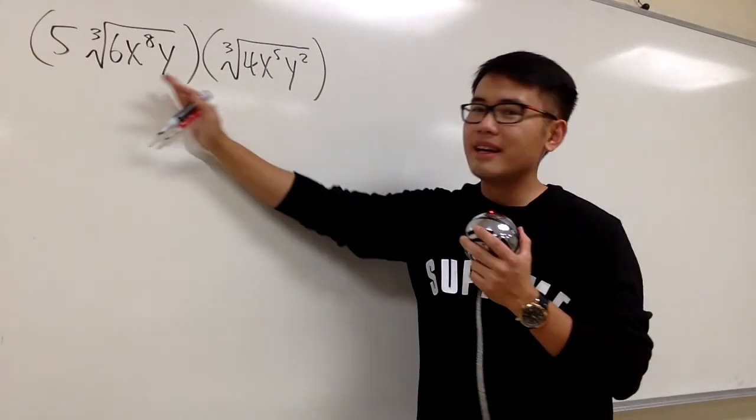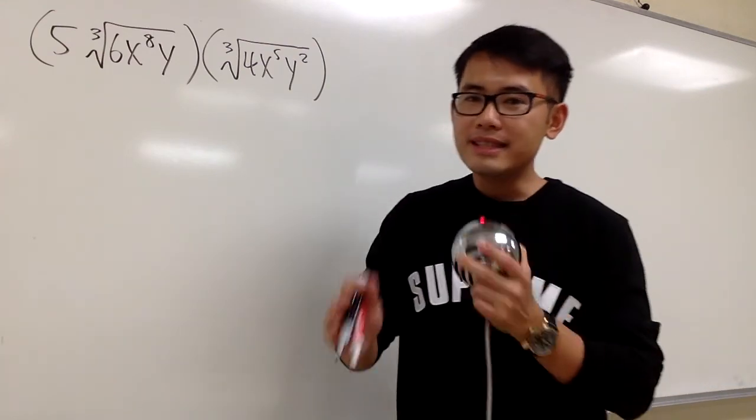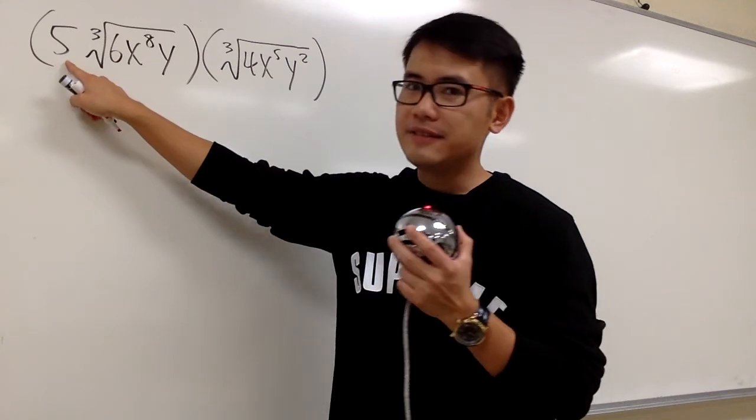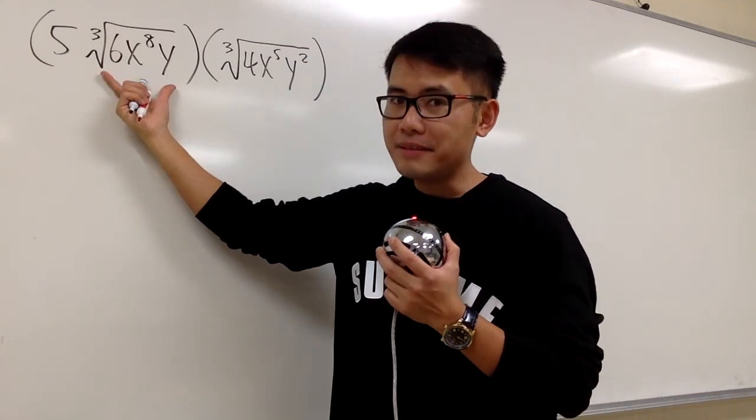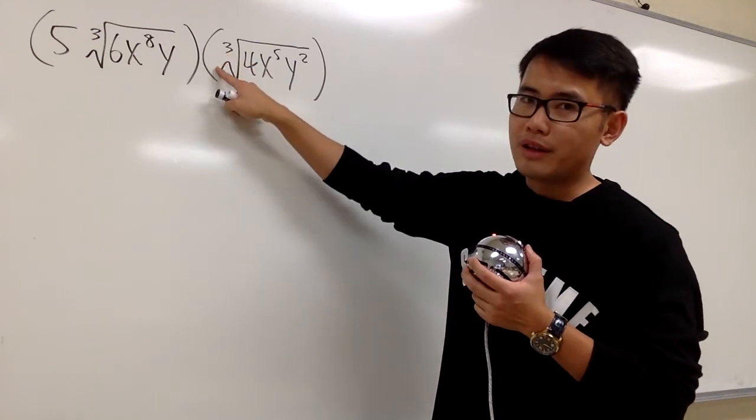Here we are going to multiply and simplify these two radical expressions. You have to remember, inside times inside, and outside times outside. First of all, you see that this 5 is on the outside, 5 times this cube root. And for the second parenthesis here, we technically just have a 1 on the outside.